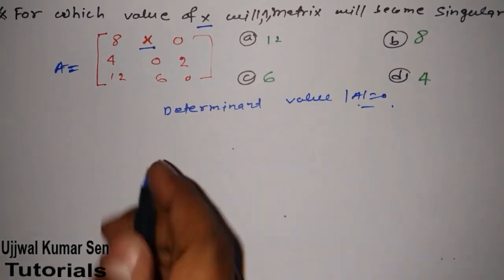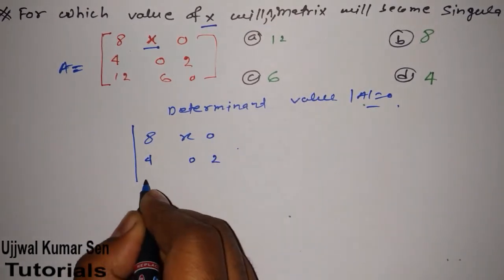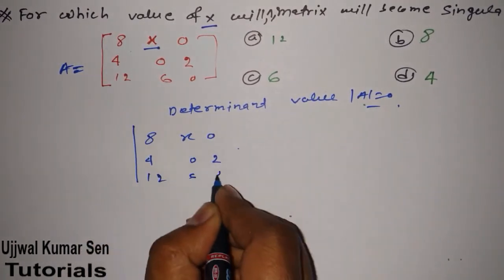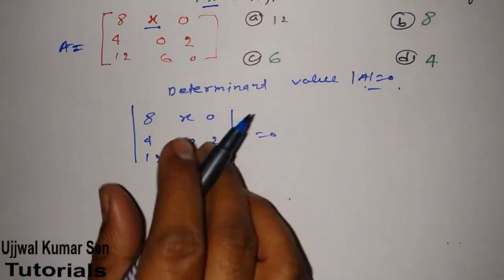So from this matrix [8, x, 0; 4, 0, 2; 12, 6, 0] is equal to 0. Now we have to find out its determinant.